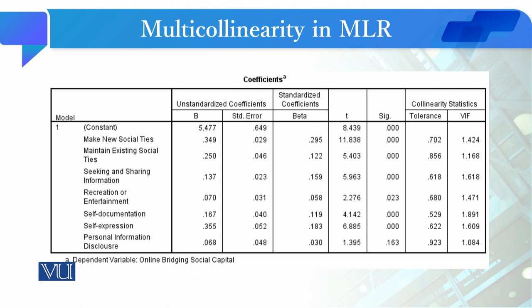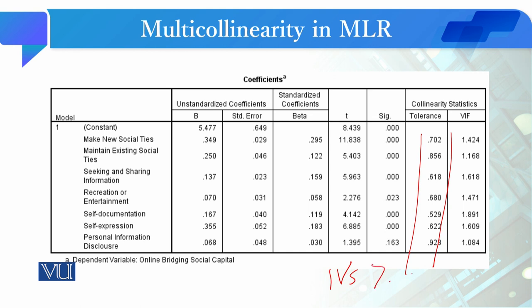Ab jo doosra tarika hai multicollinearity ko check karne ka multiple linear regression mein, wo yeh hai ke hum tolerance ki values dekh lein har IV ki. Yeh aapke samne jo MLR ki ek output hai, isme coefficients aur standardized coefficients ke upar hum baad mein baat karenge. Abhi hum har IV ka tolerance level dekh rahe hain. Yeh sare IVs ki jo values hain, yeh greater than 0.50 hain. Theory yeh kehti hai ke agar IVs ki tolerance value less than 0.10 ho to wahan pe bahut zyada possibility hai ke multicollinearity exist karti hai. Hamare data mein values 0.50 se badi hain, is matlab hai ke is test se bhi multicollinearity nahi hai.